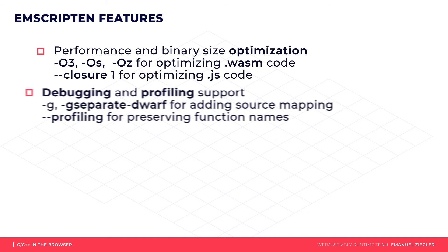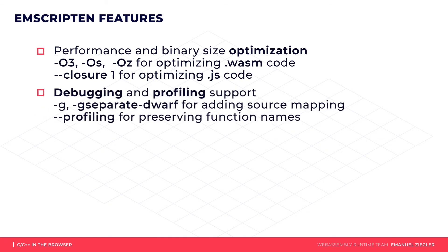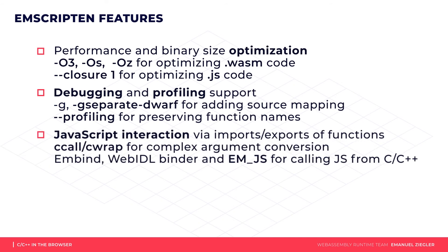Emscripten also supports generating debugging information, which can be used with the upcoming Chrome DevTools support for seamless debugging and profiling of JavaScript and C++ code. It can also help you interact with JavaScript — either by making it easier to call WebAssembly code from JavaScript using CCALL and CWRAP, as shown earlier, or for calling JavaScript directly from within your C/C++ code. For this, EMBIND, the WebIDL binder, and EMJS macros are available.